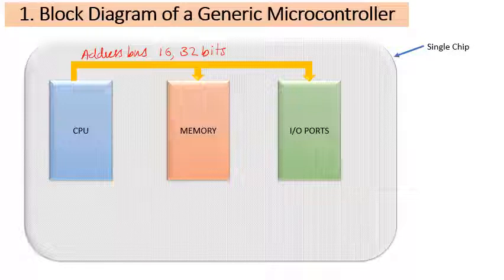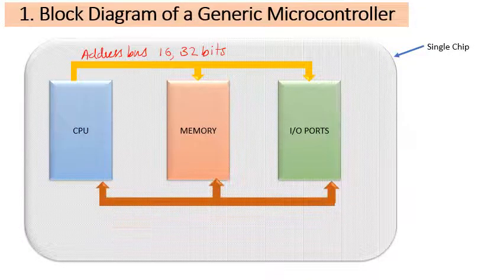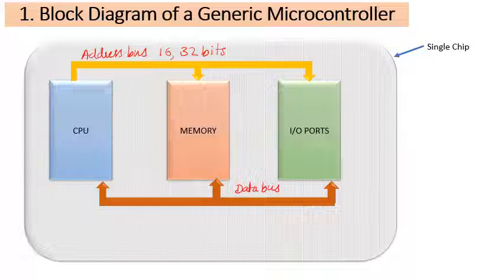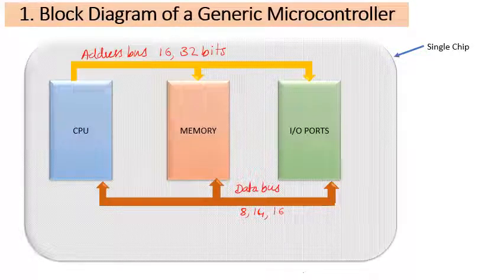There is another important bus called the data bus. As the name suggests, it is used to transport data from the CPU to the memory location or extract data from the memory location to the accumulator of the CPU, and also to send high or low signals to the input/output port. The data bus can be 8-bit, 14-bit, or 16-bit in size.